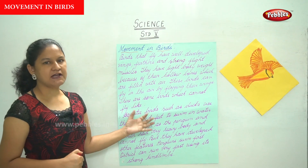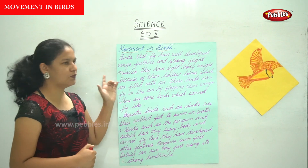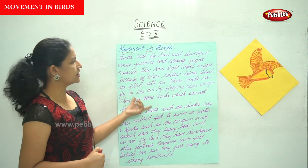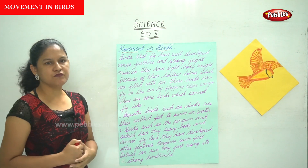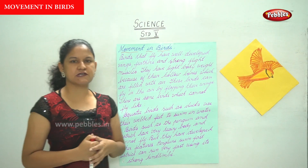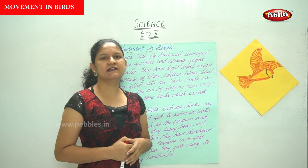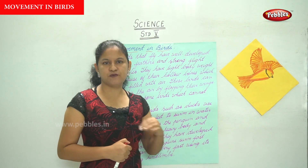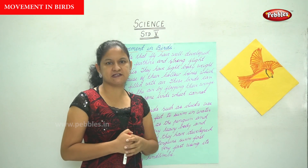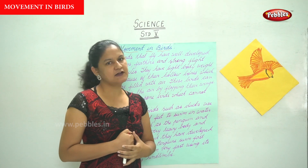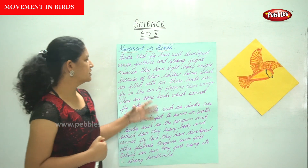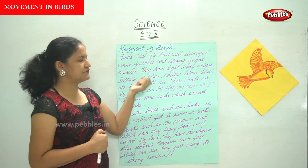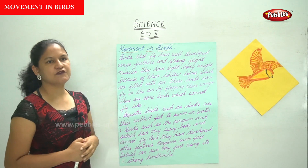These birds can fly in the air by flapping their wings. If you notice a bird, it starts flapping its wings before it takes off, that is before it starts flying. Birds that fly have well-developed wings, feathers, and strong flight muscles.